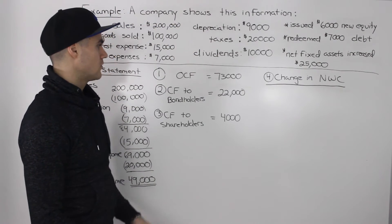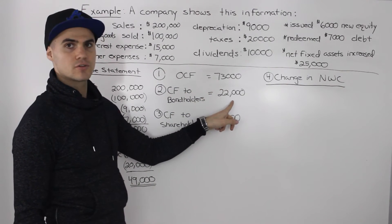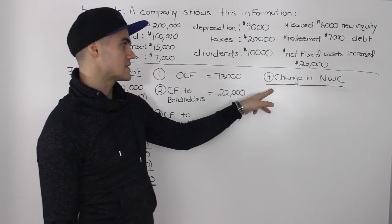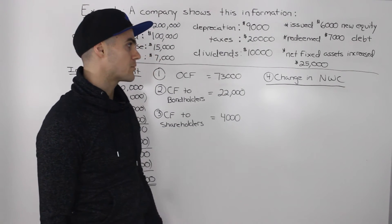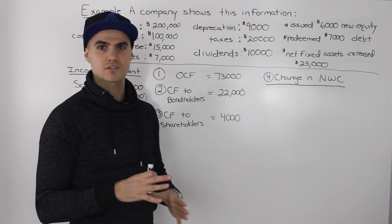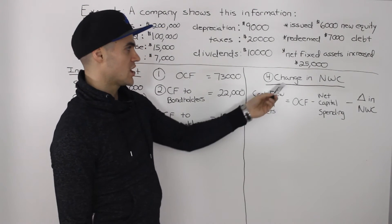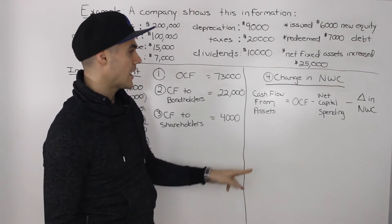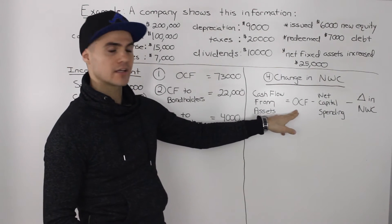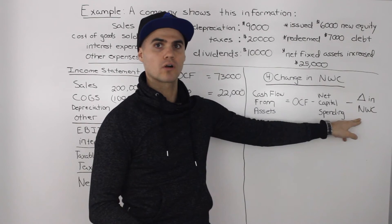Summarizing what we've found so far: operating cash flow is $73,000, cash flow to bondholders is $22,000, cash flow to shareholders is $4,000. Now what we still have to find is the change in net working capital. This is the hardest of the four because there will be a lot of moving parts and algebra. The change in net working capital is part of the cash flow from assets formula: cash flow from assets equals OCF minus net capital spending minus the change in net working capital.